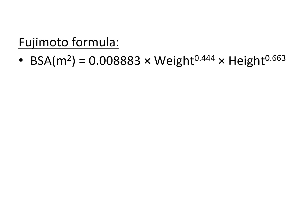Then we go to Fujimoto. For Fujimoto, BSA is the product of weight raised to the power of 0.444, height raised to the power of 0.663, and a constant which is 0.008883.